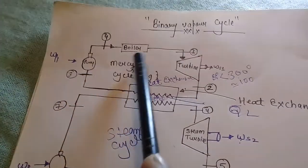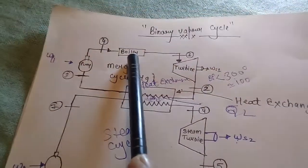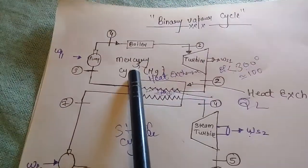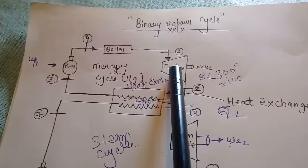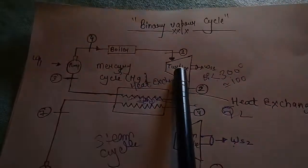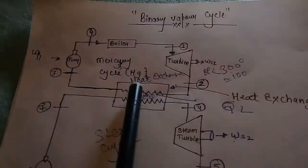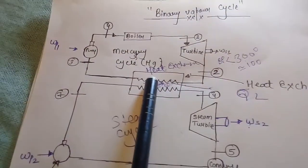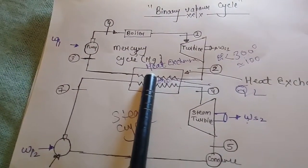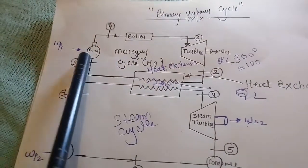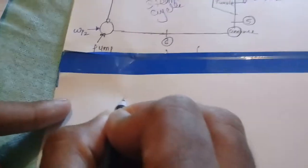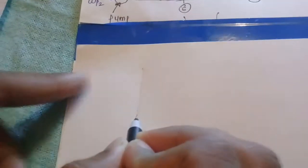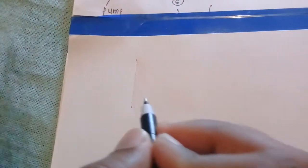This is the binary vapor cycle. This is our boiler of mercury cycle, this is a turbine for mercury cycle, this is a heat exchanger for mercury cycle, and this is a pump. We are going to draw the graph.